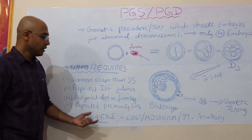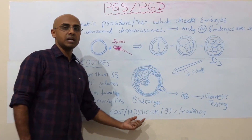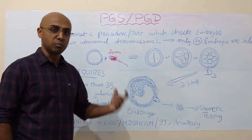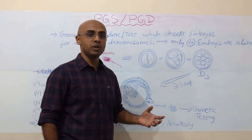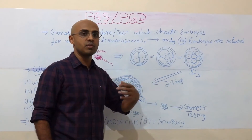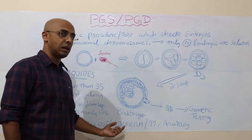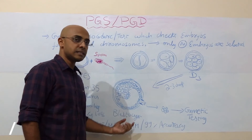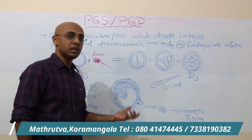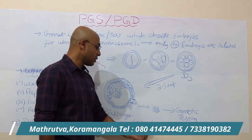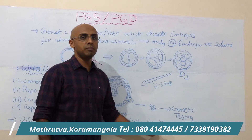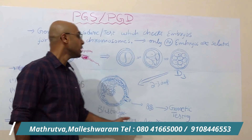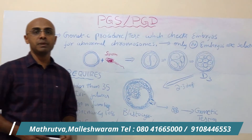What are the disadvantages? Of course, it is high cost, and something called mosaicism. Mosaicism means that even though we are diagnosing some embryos as abnormal, sometimes those embryos may actually be normal — they may develop normally if allowed to continue. So, around 20% of embryos we may be discarding as abnormal may in fact be normal embryos. The accuracy of PGS is 99%, but there is still a 1% margin where we may not be accurate. This is all about PGS and PGD.